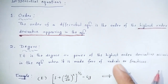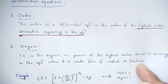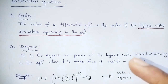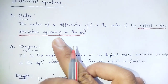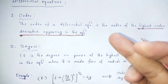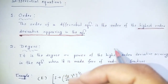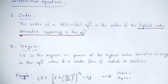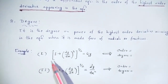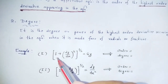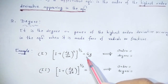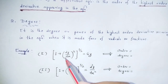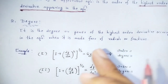An important condition: the degree is defined only when the equation is made free of radicals and fractions. Let's come to the example to see how order and degree are determined in practice.